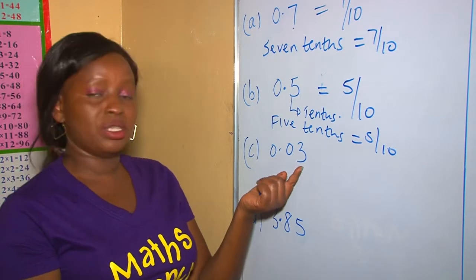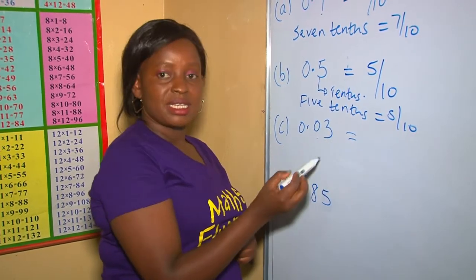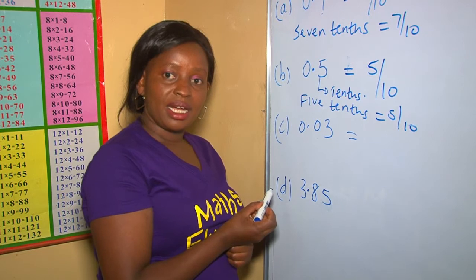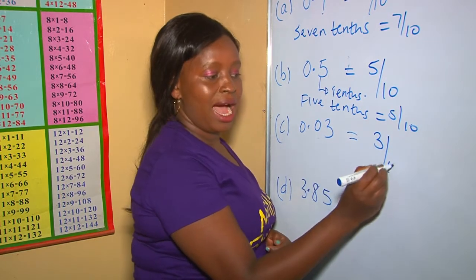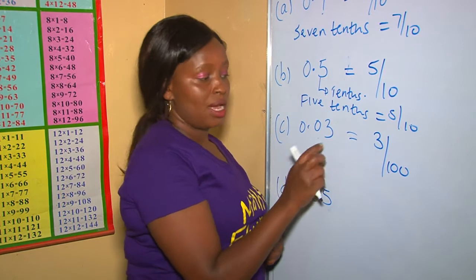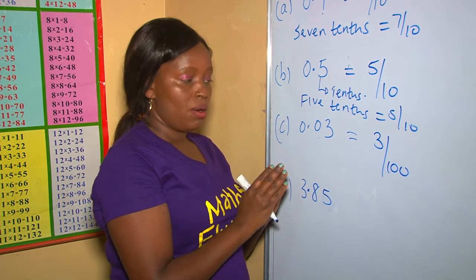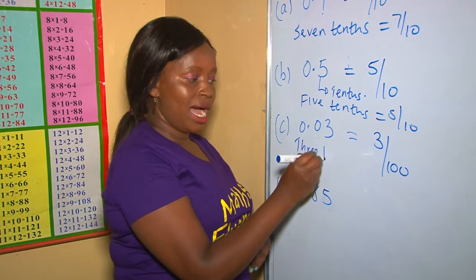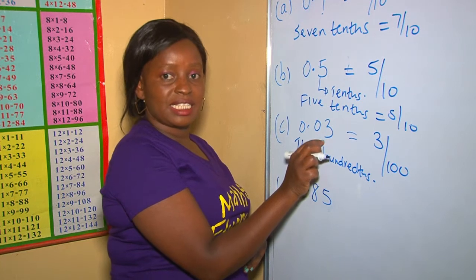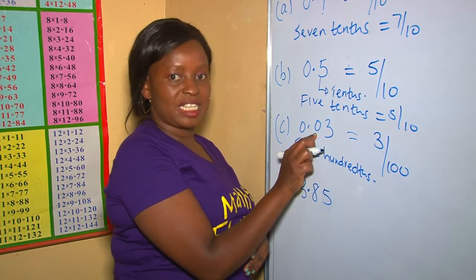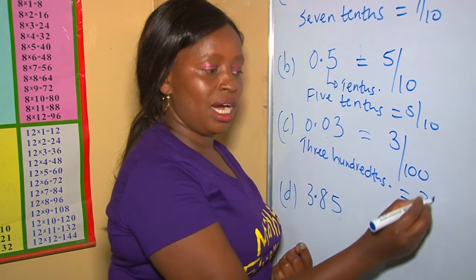Here we have 0.03. After the decimal point, there are two digits, meaning that our denominator should have two zeros, which is going to be three out of a hundred, because a hundred has two zeros. Again, you can also be led by the name of the decimal, which is three hundredths. Since three here takes up the position of hundredths — zero is tenths, then three is hundredths — so three hundredths as a fraction is three out of a hundred.